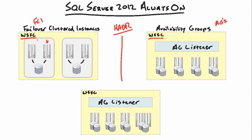Both of these technologies sit right on top of Windows Server Failover Clustering. So the first thing we need to do before setting either of these technologies up is getting a Windows Failover Cluster up and running. It's pretty straightforward — you walk through a wizard, give it a virtual network name, a virtual IP address, and optionally add nodes into the cluster. The cluster monitors health through a quorum, which is a voting mechanism where each node has a vote.